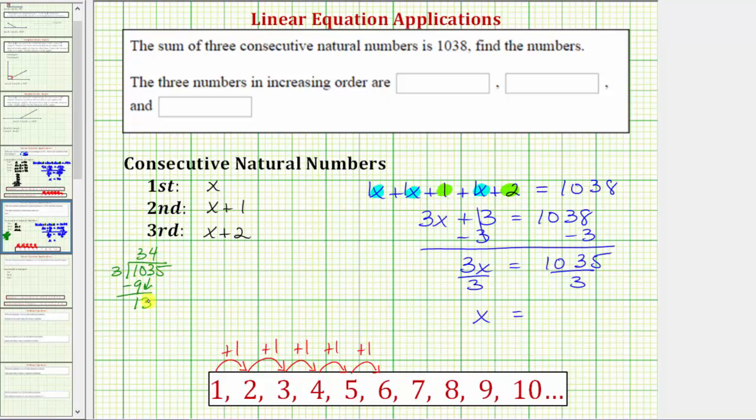Bring down the three. There are four threes in thirteen. Four times three is twelve. Subtract. Bring down the five. And there are five threes in fifteen. Five times three is fifteen. Subtracting.